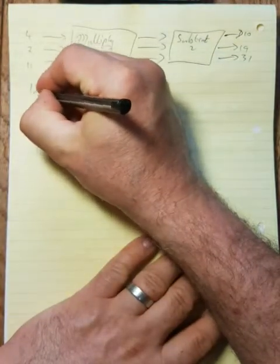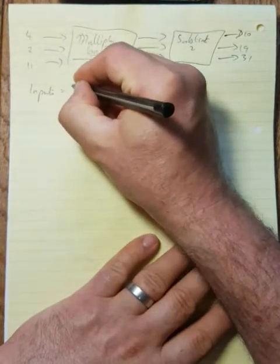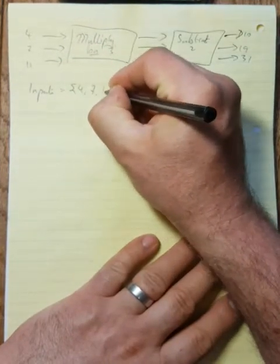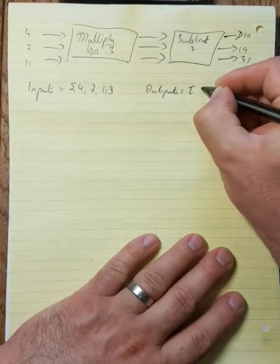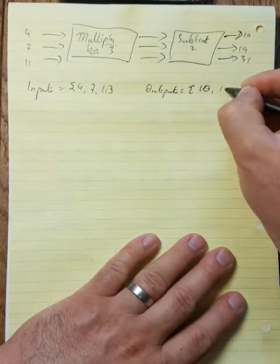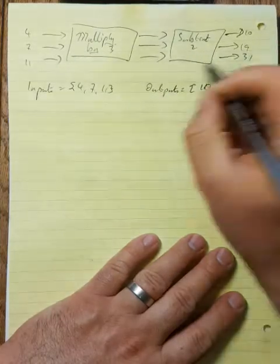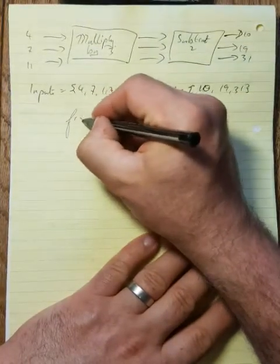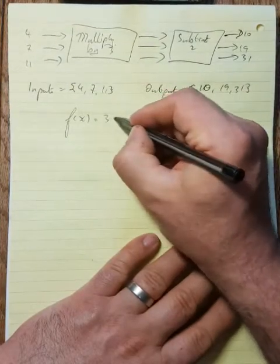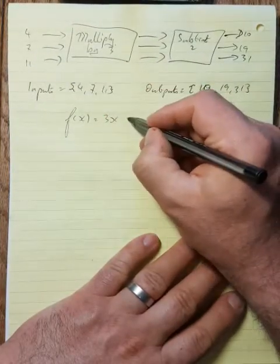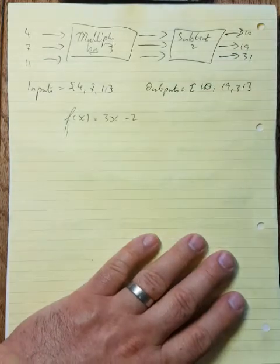My inputs were 4, 7, and 11. And my outputs were 10, 19, and 31. And this function here, f of x, I could have, instead of using words, rewrote it as multiply by 3. So multiply my input x by 3 and subtract 2.